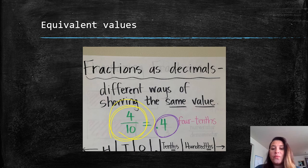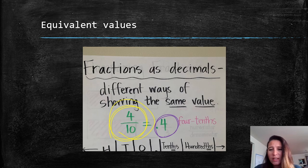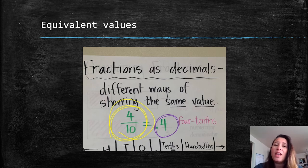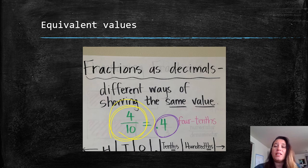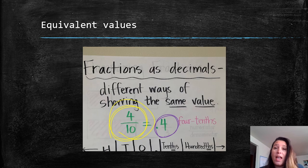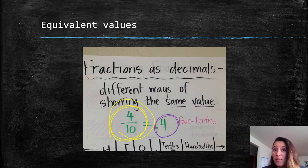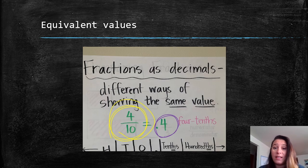Now, they have the same value. And you might ask yourself, why would we have two ways of writing the same value? And I want you to keep asking yourself that question as we move along in the lesson. You will see that sometimes it's better or easier or more appropriate to write a value as a fraction, and sometimes it's better or easier or more appropriate to write a value as a decimal.